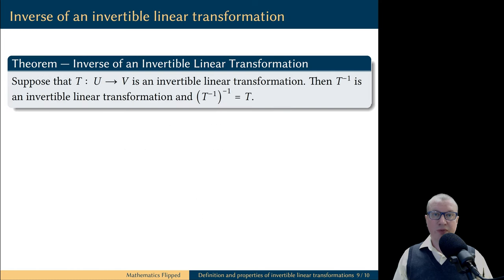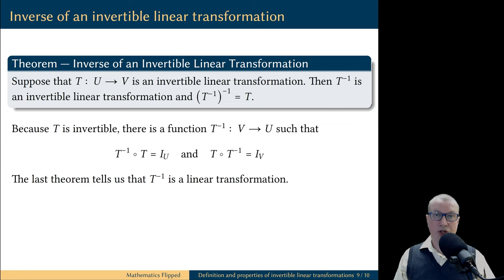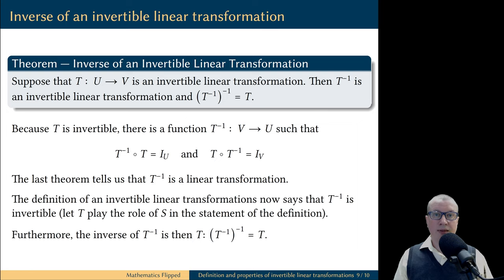Next, let's prove that the inverse of an invertible linear transformation is itself an invertible linear transformation, and the inverse of the inverse is the original linear transformation. So we have an invertible linear transformation t. Therefore there is another linear transformation t inverse which composes with t to the identity transformation. We know this function is automatically a linear transformation. And the definition of an invertible linear transformation is symmetric with respect to the two transformations: if t inverse is the inverse of t, then t is the inverse of t inverse.